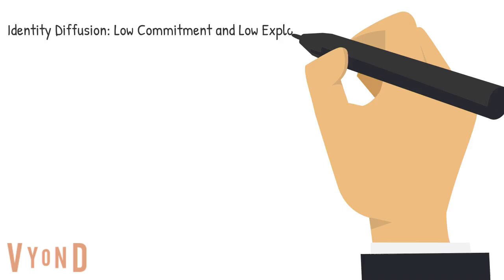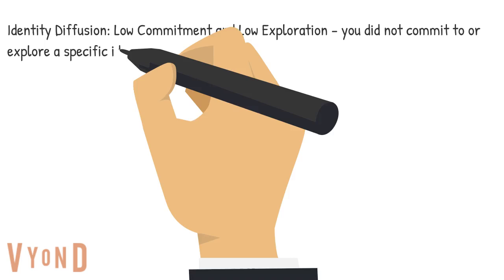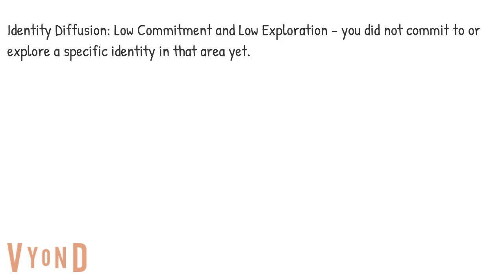The first identity status is identity diffusion. It's when an individual has made low commitment and low exploration — they haven't really started exploring the possibilities of their identity yet, and they haven't made any commitments.